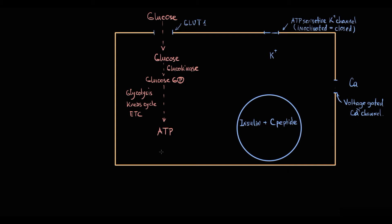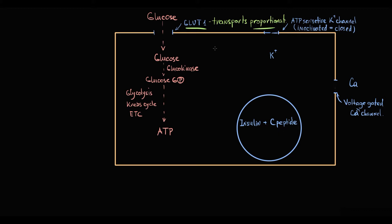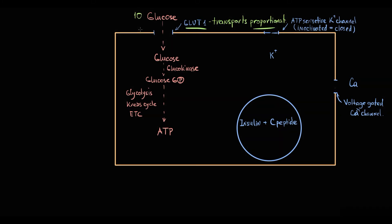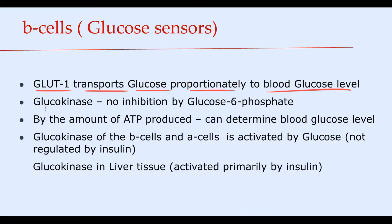This is the most crucial step. The reason beta cells have exactly this GLUT2 transporter is that it transports glucose into the beta cells in proportional amounts to the glucose level in the blood. For example, for every 10 glucose molecules in the blood, the transporter brings in 2 glucose molecules; for every 30, it brings in 6. The higher the glucose level in the blood, the higher the glucose intake into the cell. Glucokinase acts as an energy sensor because its activity is not inhibited by glucose-6-phosphate.